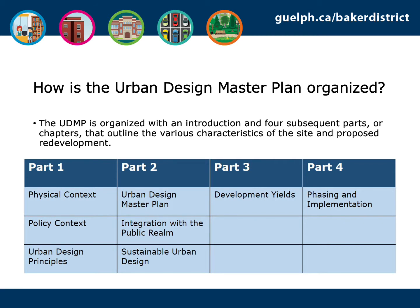The Urban Design Master Plan is organized with an introduction and four subsequent parts outlining the various characteristics of the site and proposed redevelopment. Part 1 summarizes the site's physical context, policy context, and urban design principles. Part 2 summarizes the Urban Design Master Plan, including integration of the public realm and sustainable urban design policies. Part 3 summarizes preliminary development yields or statistics. Part 4 summarizes notes on phasing and implementation. An introduction is also contained within the report where the vision, process, and consulting team for the Baker District Redevelopment are summarized.